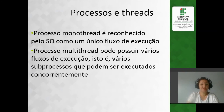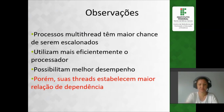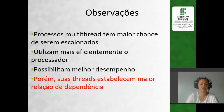O processo é mono-thread se é reconhecido pelo sistema operacional como o único fluxo de execução. É multi-thread se gerou vários fluxos de execução, que devem ser tratados como subprocessos. Isso vai gerar alguns problemas, porque esses subprocessos geralmente são muito dependentes entre si. Os processos multi-thread têm maior chance de serem escalonados, pois cada thread pode ser escalonada como um bilhete para o escalonador — utilizam mais eficientemente o processador, evitam ociosidade e possibilitam melhor desempenho. Porém, suas threads estabelecem maior relação de dependência, surgindo problemas de sincronismo que devem ser tratados.